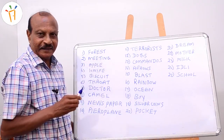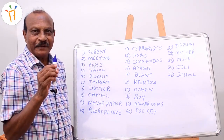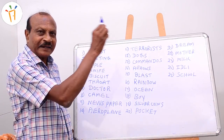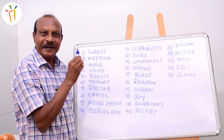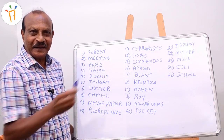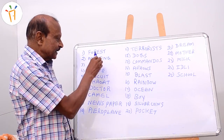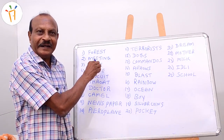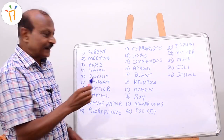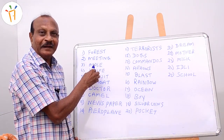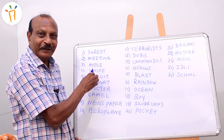Here is how you build the story. There is a forest. In the forest, a meeting is going on — nobody normally holds a meeting in a forest, but the next word is meeting, so we connect them. In the meeting, guests are arriving, and for the guests they are serving apple. To cut the apple, they are given a knife.